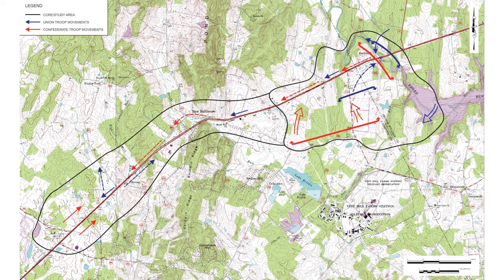Where General Kilpatrick saw a successful routing of the enemy out of Buckland, he was in fact entering a trap, unaware that Fitzhugh Lee's division was within striking distance in Auburn. As Stuart states in his official report: "After offering some considerable resistance to the advance of the enemy at this point, in accordance with the suggestion of Major General Lee, I retired with Hampton's division slowly before the enemy until within two miles of Warrenton, in order that Major General Lee, coming from Auburn, might have an opportunity to attack the enemy in the flank and rear. The plan proved successful." This map of the core battle area shows the movements from Buckland westward beyond New Baltimore on the turnpike and the Confederate flanking attack from the south.